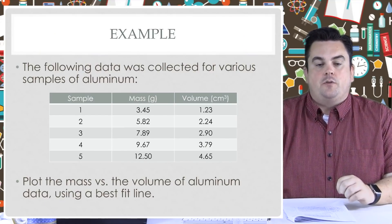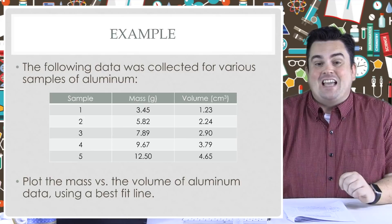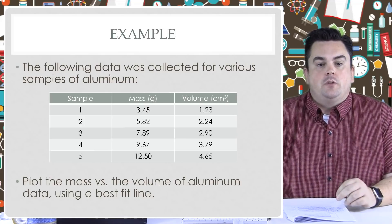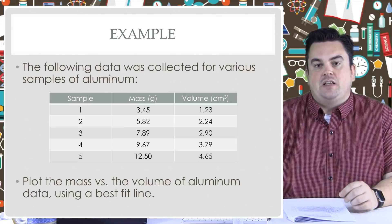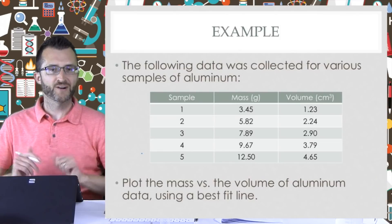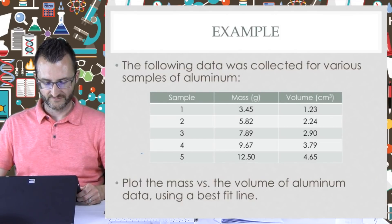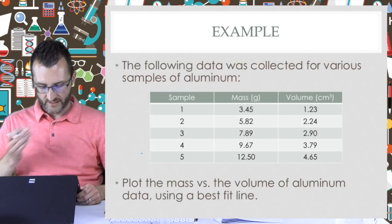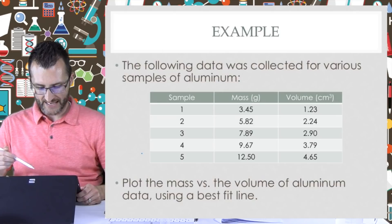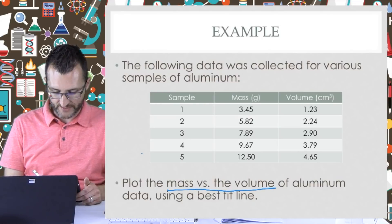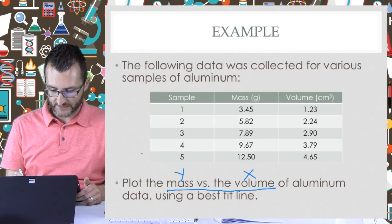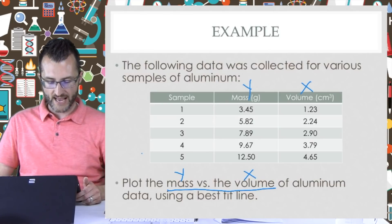All right, ladies and gentlemen, we're going to do an example here of graphing. We're going to take a look at the following data collected for various samples of aluminum. We're going to plot mass versus the volume of aluminum data using a best fit line. So looking at this data, what's going to be our x-axis and what's going to be our y? Since it says plot the mass versus the volume, and the title is always Y versus X, it looks like volume is actually the x-axis and mass is the y-axis.